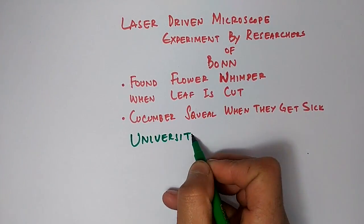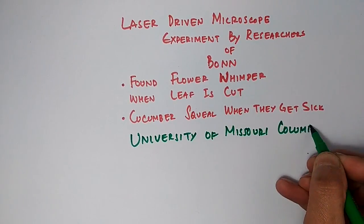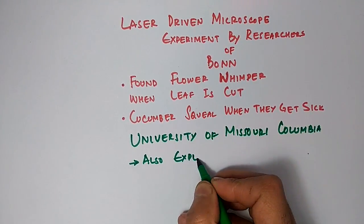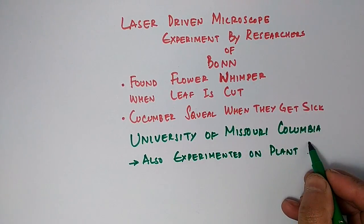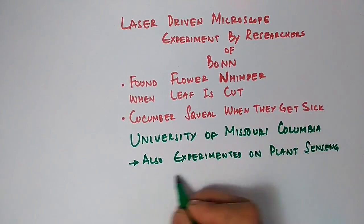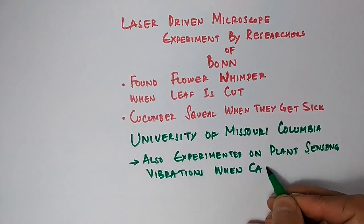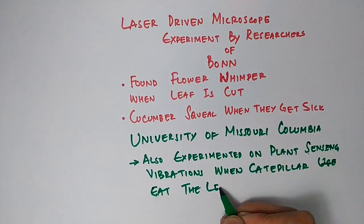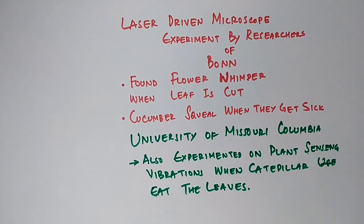Another study from the University of Missouri Columbia found that plants respond to leaf vibrations caused by leaf chewing by insects. They found that when these vibrations get more intense, plants change their metabolism and secrete some kind of chemicals, thereby acting as a defensive mechanism to repel these pests.